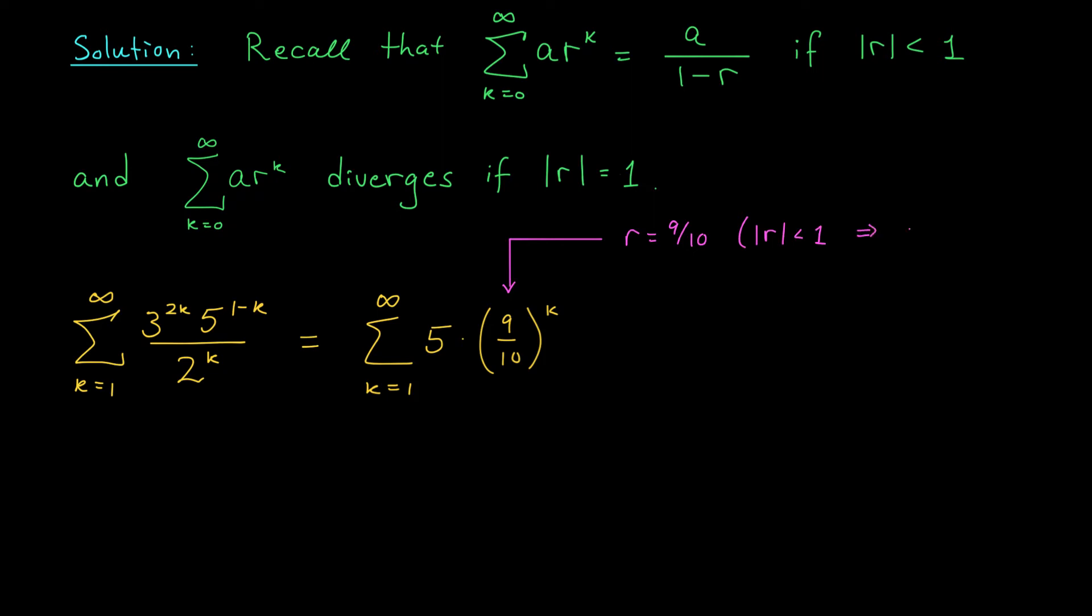The question now becomes, what's the sum of the series? Well, according to our formula, it should simply be a over 1 minus r. We know that r is 9 over 10, and a is 5. So 5 over 1 minus 9 tenths?